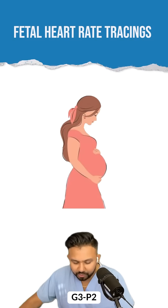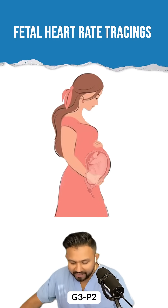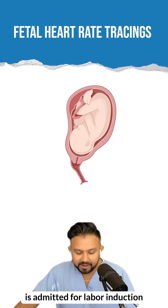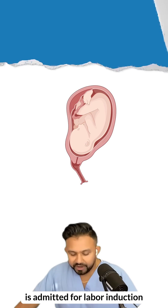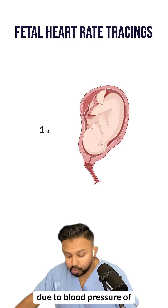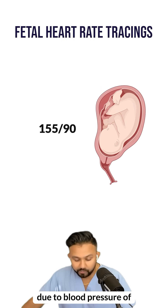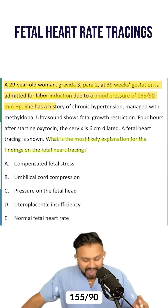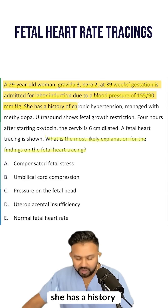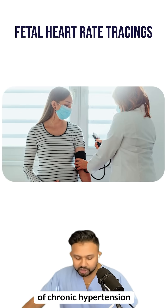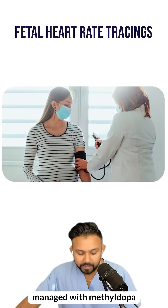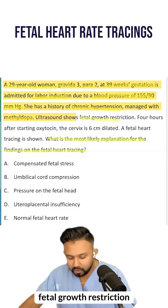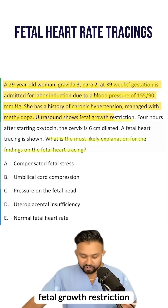A 29-year-old woman, G3P2, at 39 weeks gestation, is admitted for labor induction due to a blood pressure of 155 over 90. She has a history of chronic hypertension managed with methyldopa. Ultrasound shows fetal growth restriction.